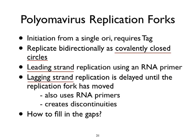Polyomavirus replication forks initiate from a single origin, require T-antigen, and replicate bidirectionally as a covalently closed supercoiled molecule — you start in one place and go in both directions simultaneously, producing two replication forks. There are four strands being replicated: two leading and two lagging. Leading strands use an RNA primer, as does the lagging strand, but the lagging strand doesn't start until the replication fork has moved to make room. These RNA primers also create discontinuities that must be filled in.